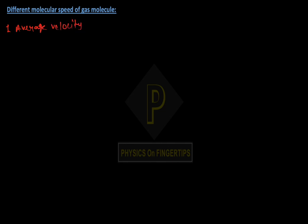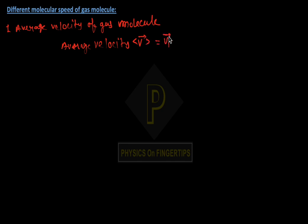Our topic is Different Molecular Speeds of a Gas Molecule. We will discuss the different types of speeds of gas molecules. First, let's discuss the average velocity of a gas molecule. Average velocity V equals V1 vector plus V2 vector up to Vn vector upon n. The average velocity value is 0, because in random motion, the sum of the vectors is 0.